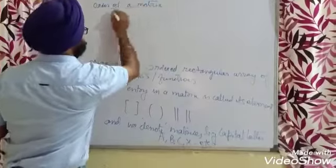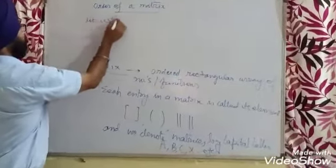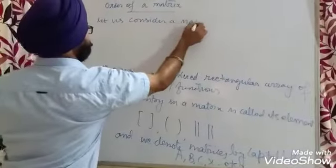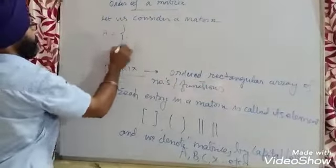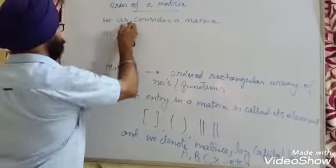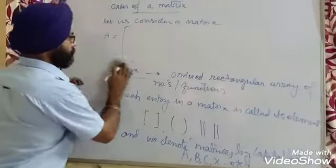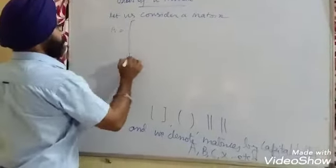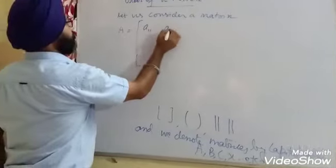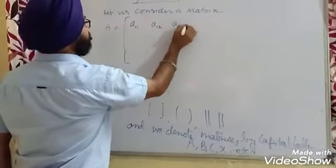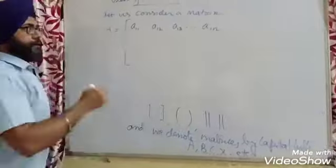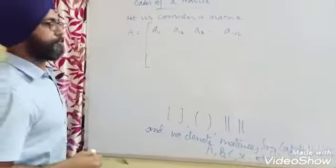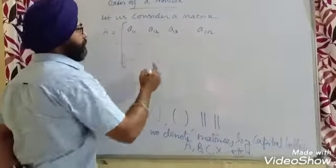Let us consider a matrix A. The entries in the first row are A11, A12, A13, dot dot dot, A1N. These are the entries in matrix A in the first row, and it has N columns.